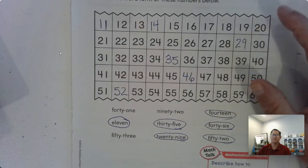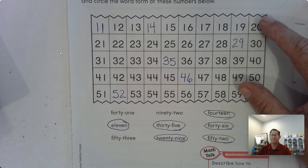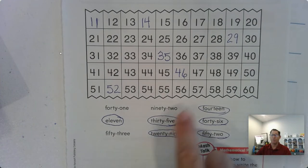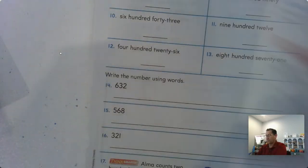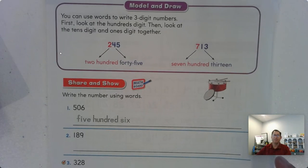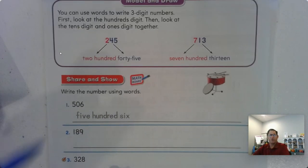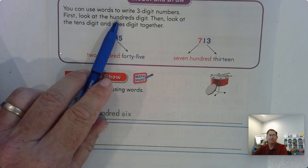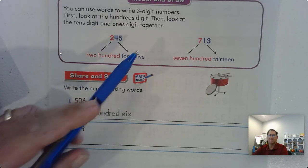Each number or digit, three-digit numbers, two-digit numbers can be written in word form, which we've talked about. Let's go to page 78 and talk about how to write three-digit numbers. Let's look at the hundreds digits first, and then look at the tens digit and ones digit together.